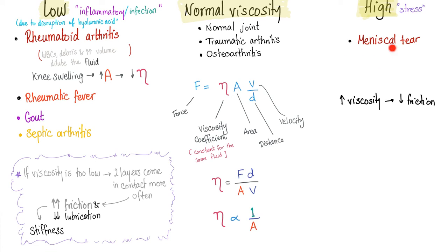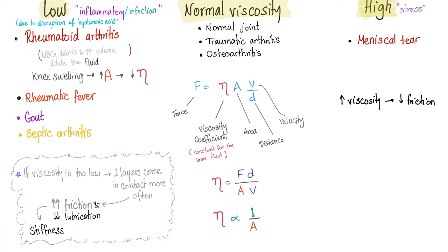High viscosity occurs in cases of meniscal tear, because of shear stress forces over a long period of time, as discussed before. A mild increase in viscosity is actually good for you — it decreases friction. However, if the viscosity is too low, the fluid is too thin and useless. The two layers will come in contact more often, leading to increased friction and decreased lubrication. That's why rheumatoid arthritis patients can get joint stiffness.